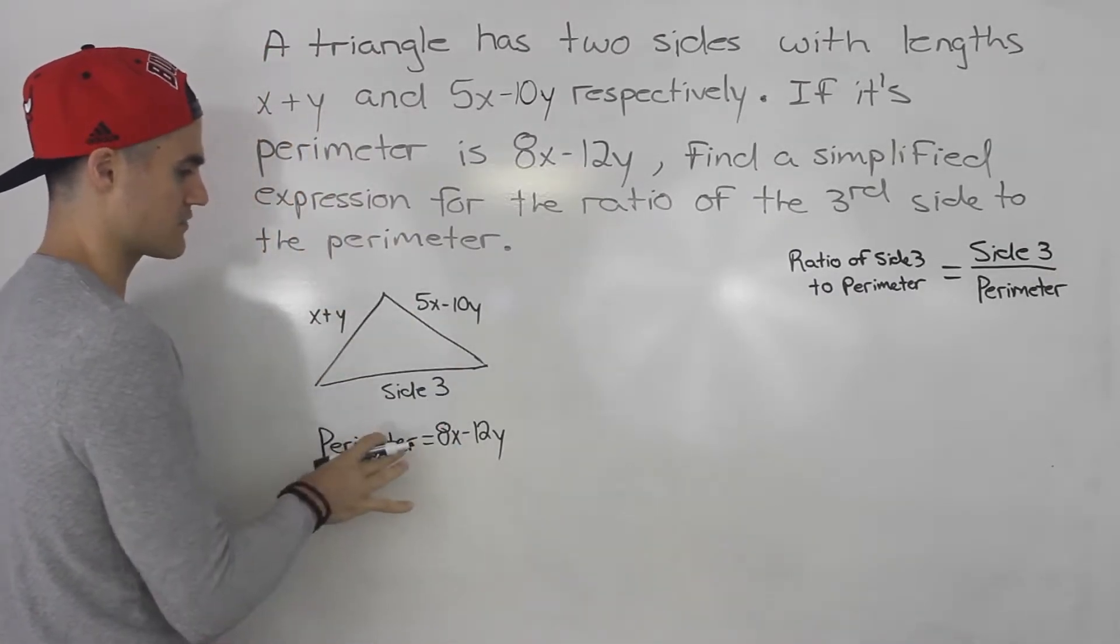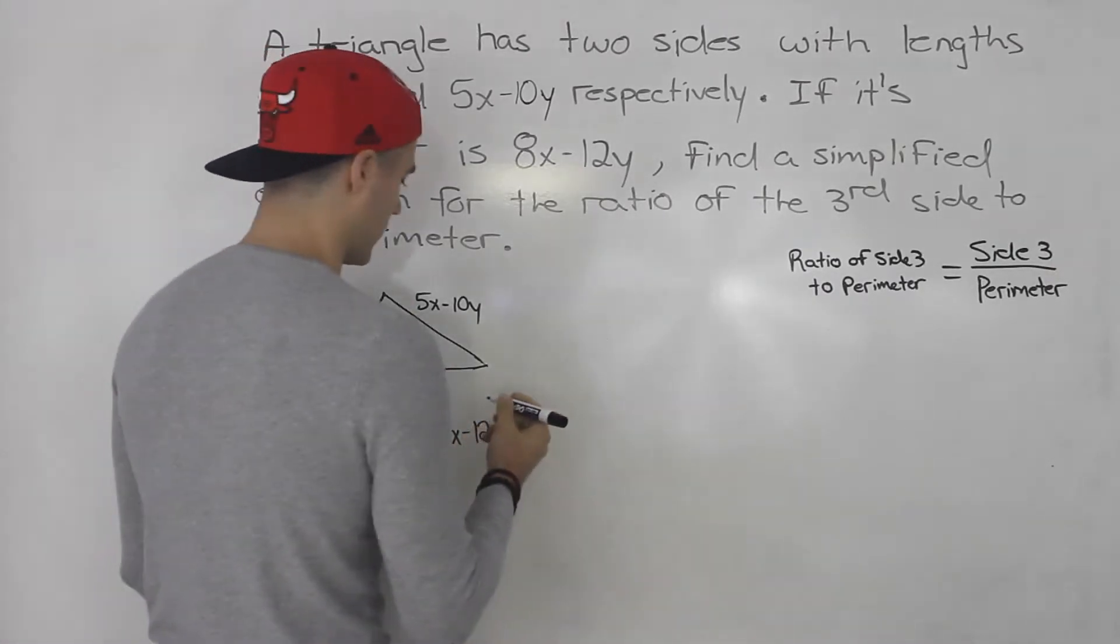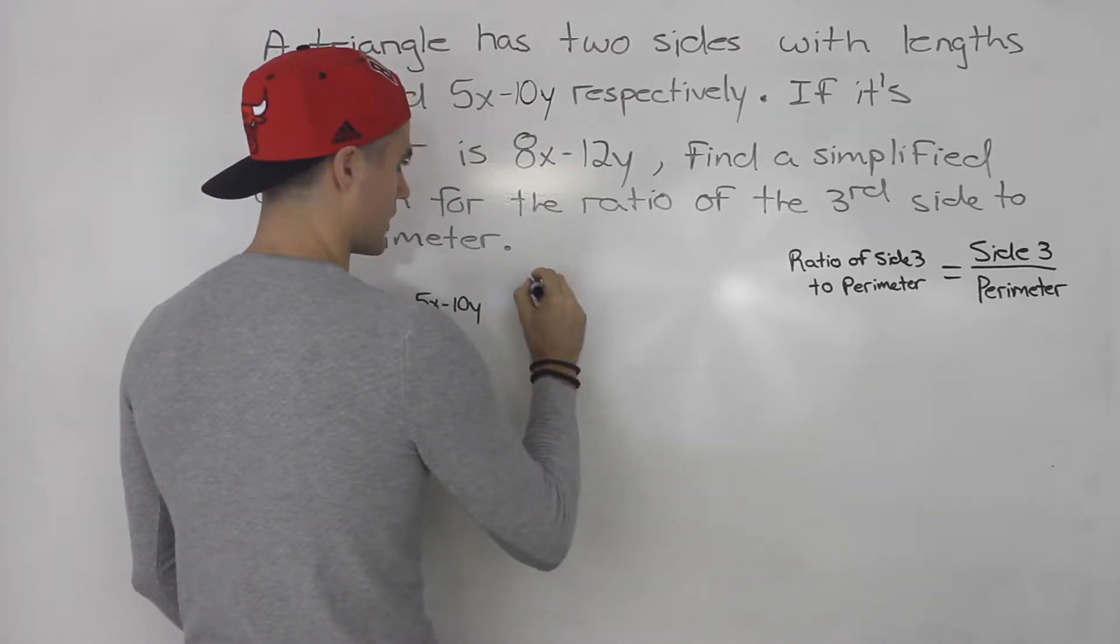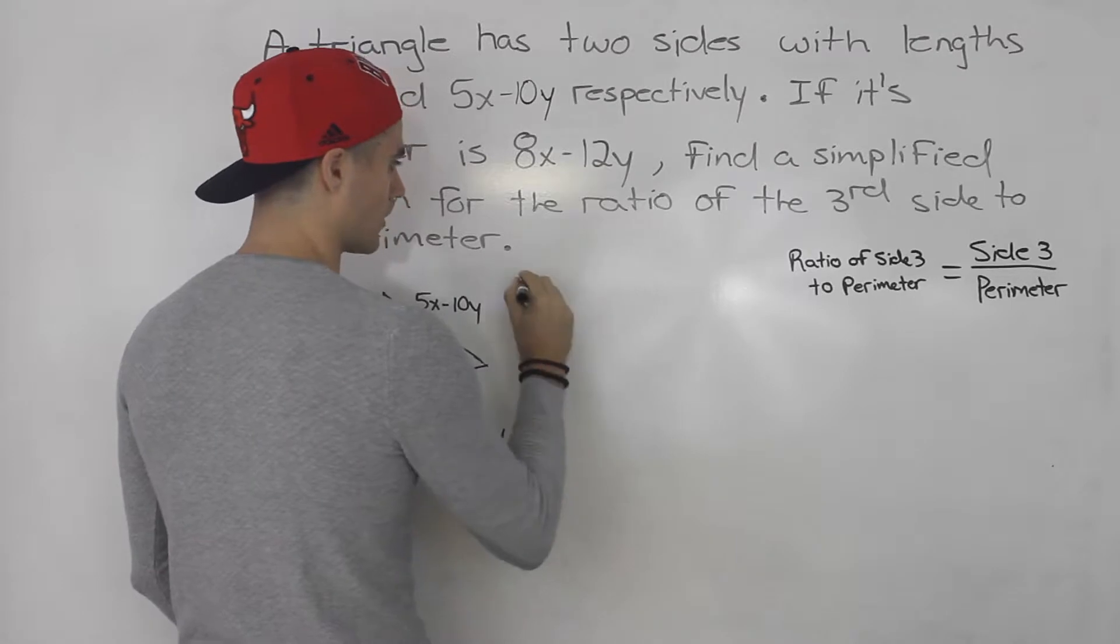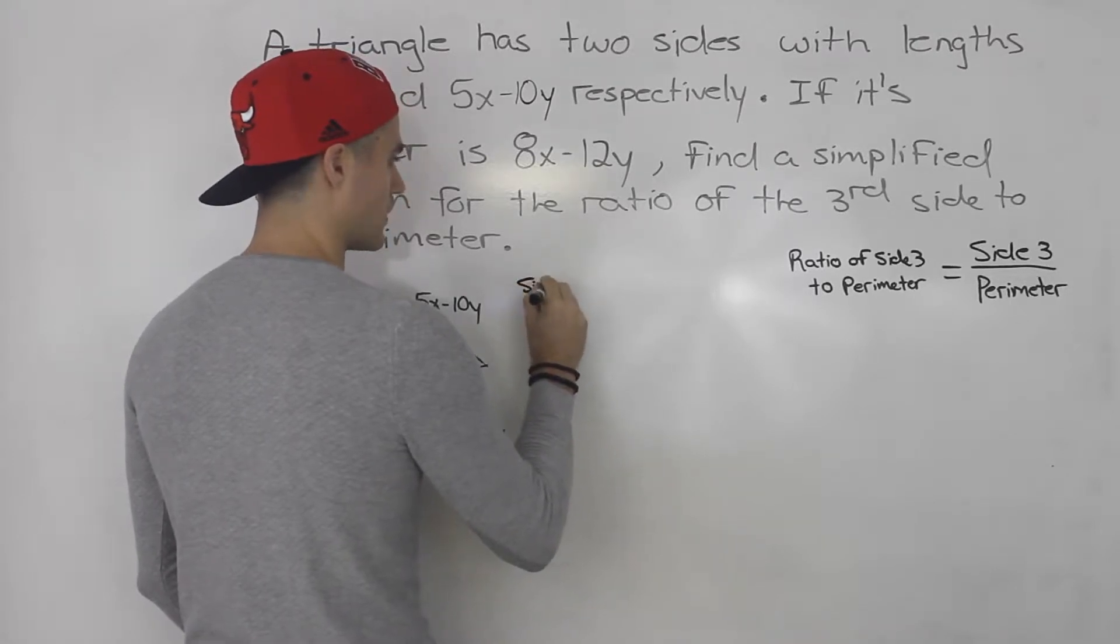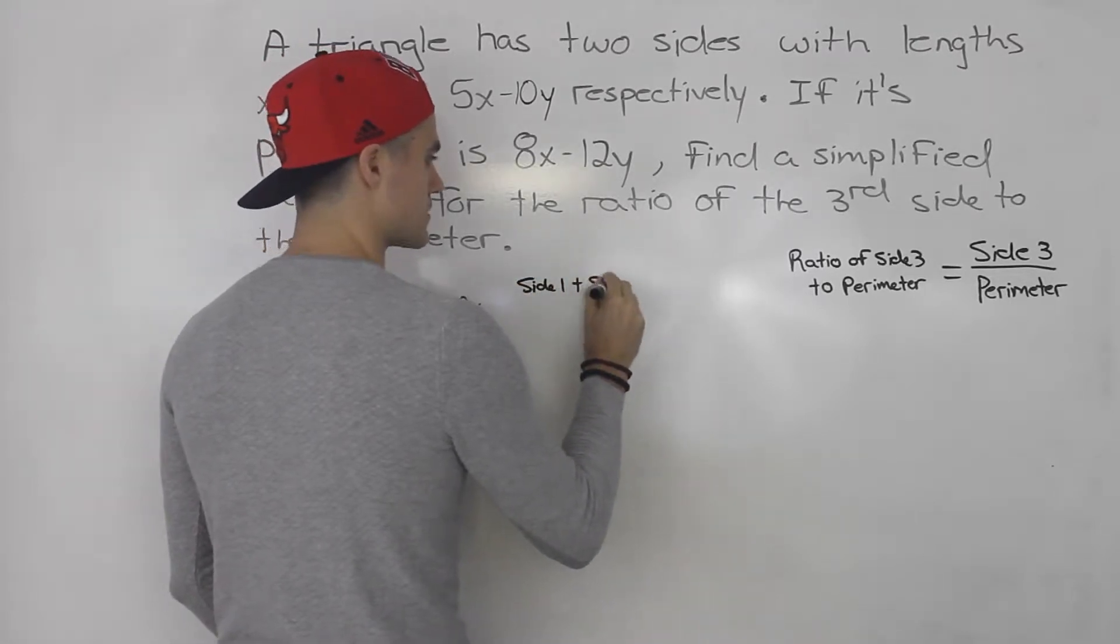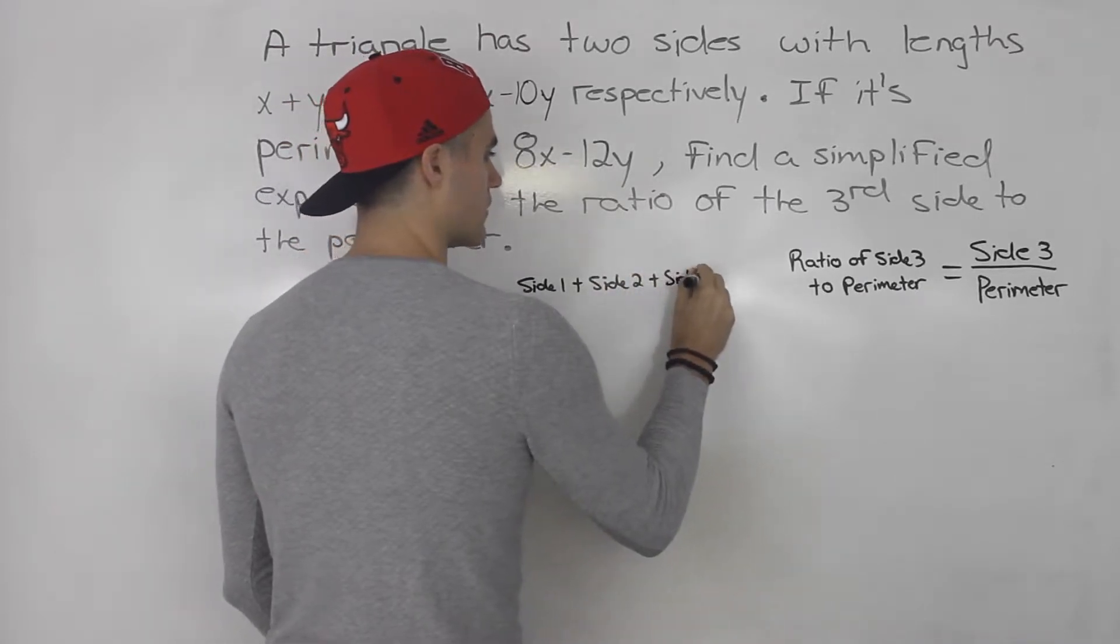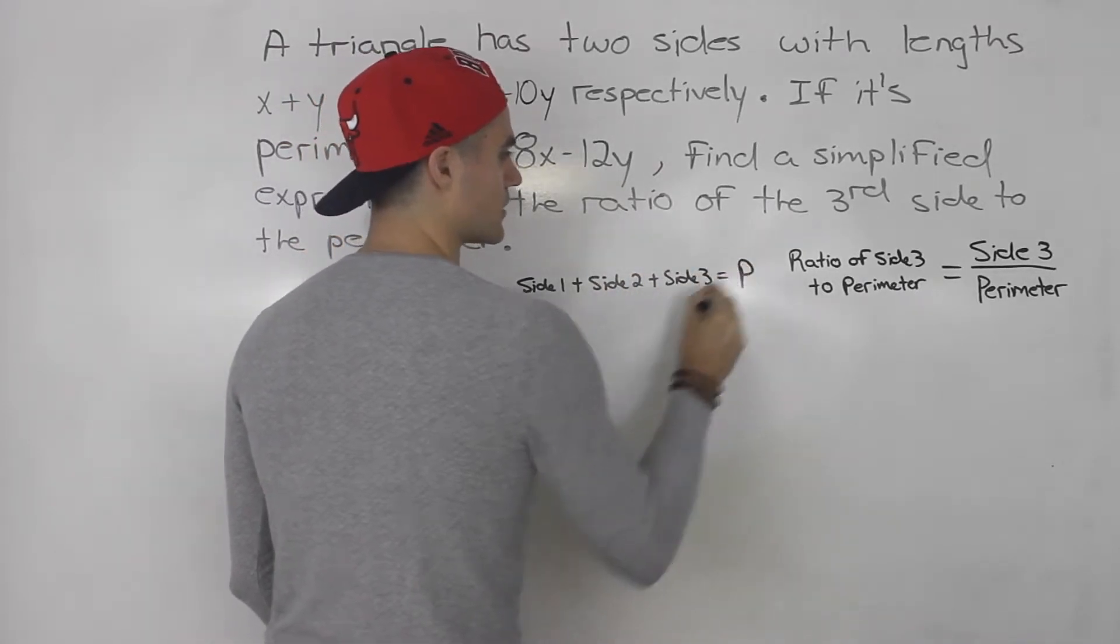And we could find that with this information here. We know in general, the perimeter is equal to side 1 plus side 2 plus side 3. That gives us the perimeter, let's just call it P.